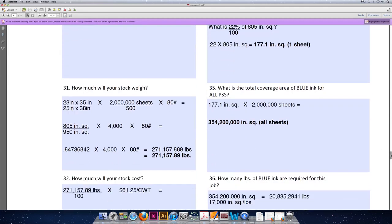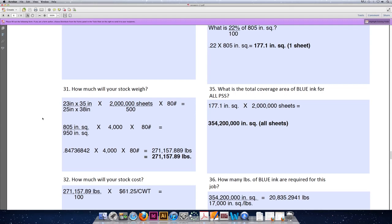From there, knowing how many sheets of paper we need to purchase, we can calculate the weight of that stock so that we can then calculate the price of the stock. The formula is the size of your paper that you're purchasing, which is 23 by 35. We are purchasing 80 pound text weight stock. The basic size of text weight stock is 25 by 38.